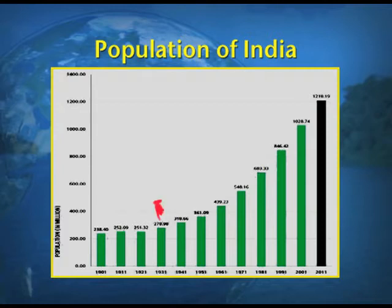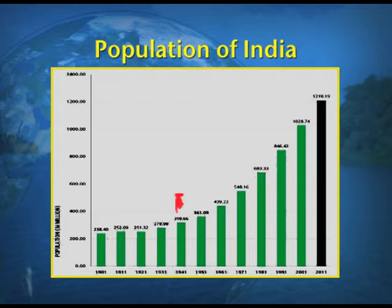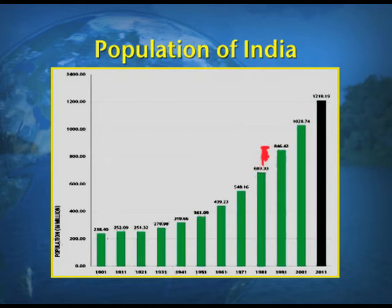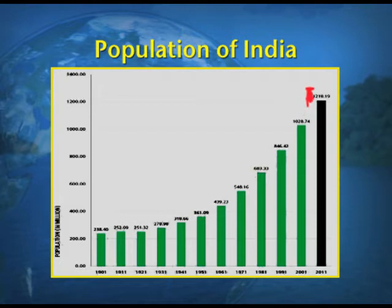In 1931 the population was 278 million; in 1941 it rose to 318 million. There is a gradual increase in population. In 1951 it rose to 361 million; in 1961 to 439 million; in 1971 to 548 million; in 1981 to 683 million; in 1991 to 846 million; in 2001 to 1,028 million. The current 2011 census indicates the population has risen to 1,210 million.